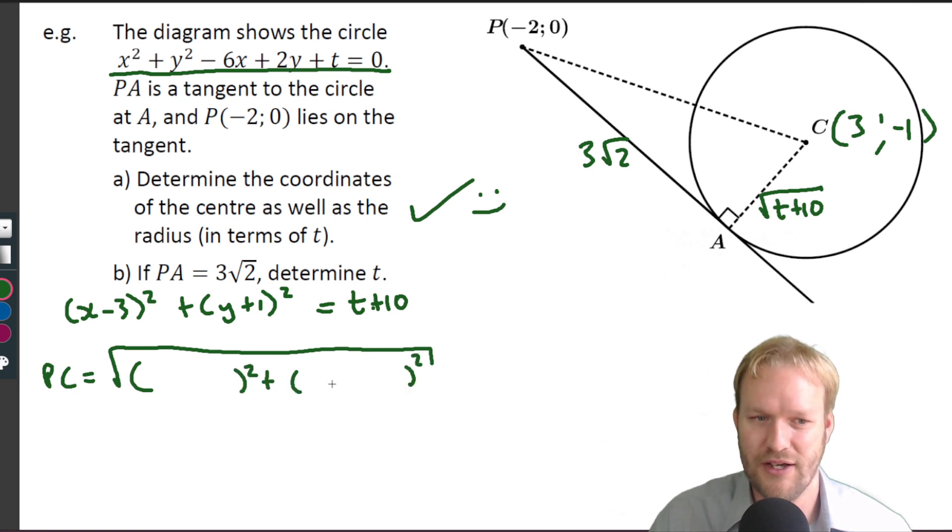And I'm just going to go -2 minus 3, P minus C, 0 minus -1, so we can get the distance of PC. Okay, well that's 5, that's 1, so 25 plus 1 is 26, square root 26.